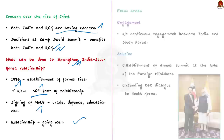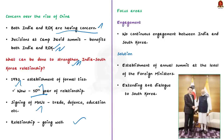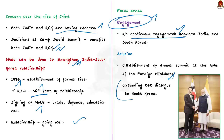Firstly, there is not enough engagement between India and South Korea. These two countries need to establish an annual summit at the level of foreign ministers. Apart from this, a 2+2 dialogue can also be carried out between these two countries. India currently has 2+2 dialogue with the US, Japan, Australia and Russia. If it is extended to South Korea, it will help in continuous engagement between these two nations.